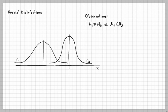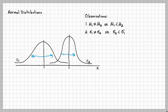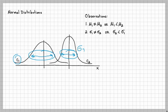Yes, mu one does not equal mu two — here's mu one and here's mu two, and mu one is smaller because it's on the left. The sigmas are also not the same. Curve one is more spread out than curve two, so sigma two is smaller than sigma one — the population standard deviation of curve two is smaller than that of curve one.